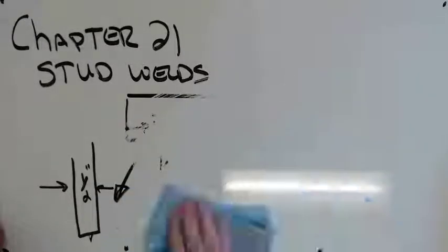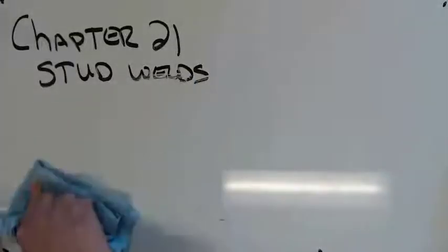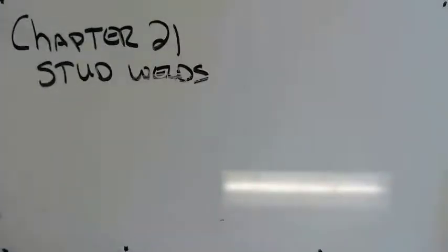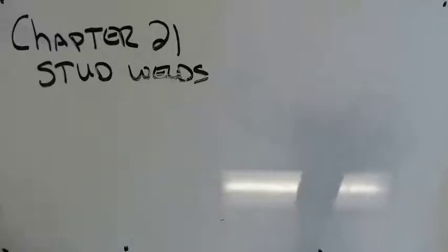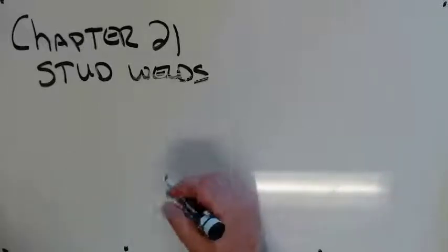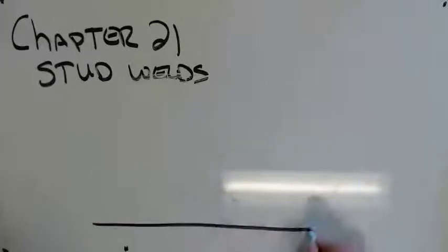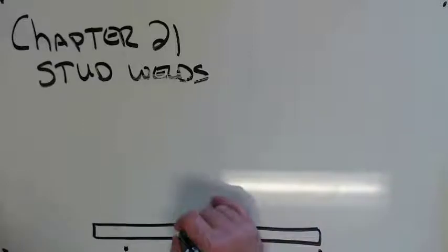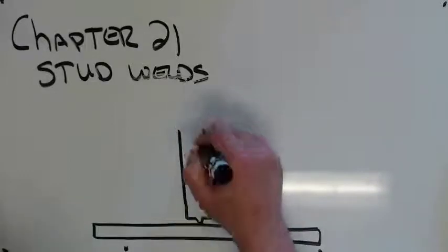Let's talk about the actual stud welding. Talk about stud guns. A stud gun is a special welding gun that is specifically designed to weld studs. Like, the name is what it does. How stud welding works is, we'll have our base plate down here. You'll have your stud.